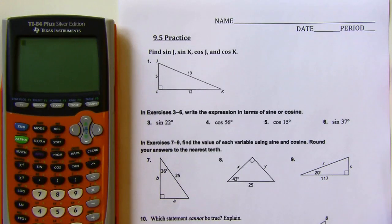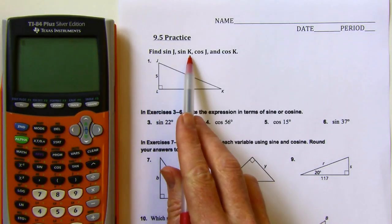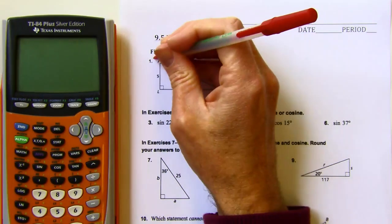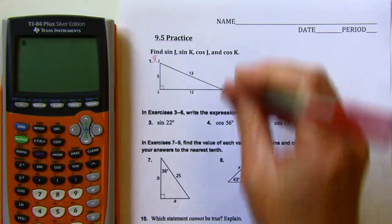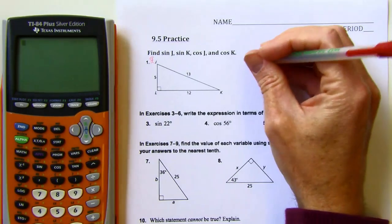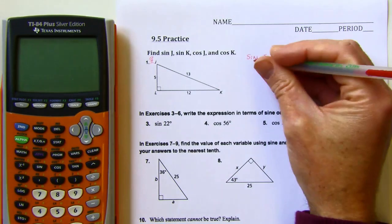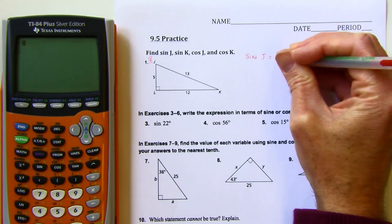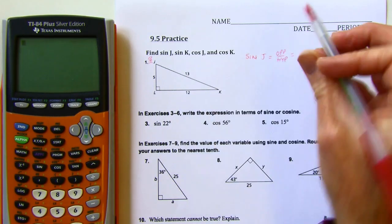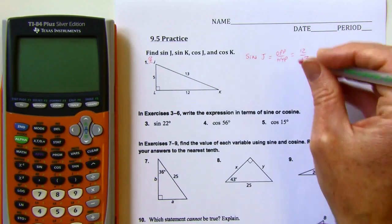Practice 9.5. Find the sine of j, the sine of k, then the cosine of j, and the cosine of k. All right, so first let's look from this perspective. So if I'm looking from that, I'm at angle j, so I'm looking for the sine of j. Make sure that's reduced. It is. Good to go there.